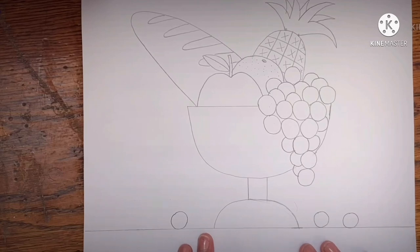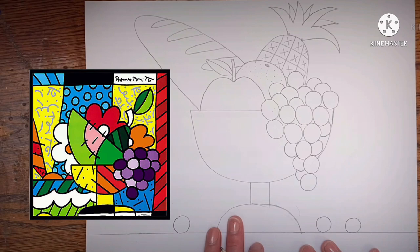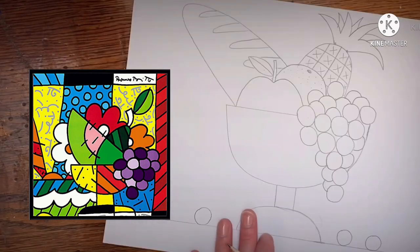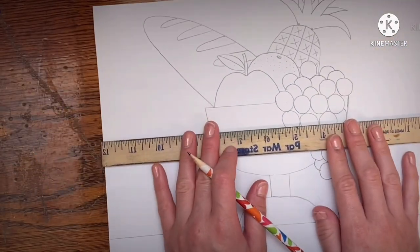Let's take a look again at Romero Brito's artwork. Does he ever have a blank background like what we have right now? No, he doesn't. He always breaks up the background with a bunch of bold black lines. So everyone, let's grab our rulers and start drawing lines to divide our backgrounds.